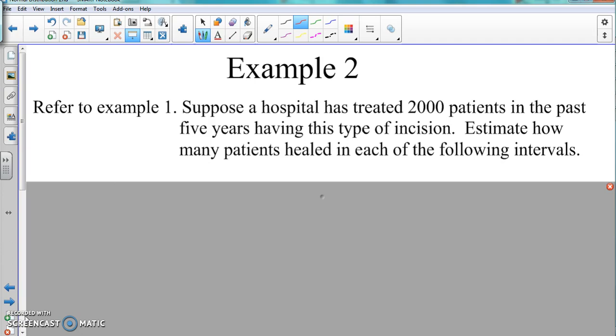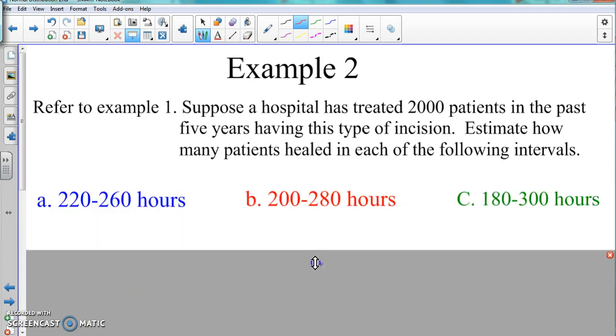Like how many people would be healed of those thousand people within that first range of time, the second range of time, and the third range of time? Here we're looking at these ranges: from 220 to 260 hours, how many people will be healed there? How many of those 2000 people will be healed between 200 and 280 hours? And how many will be healed between 180 to 300 hours?